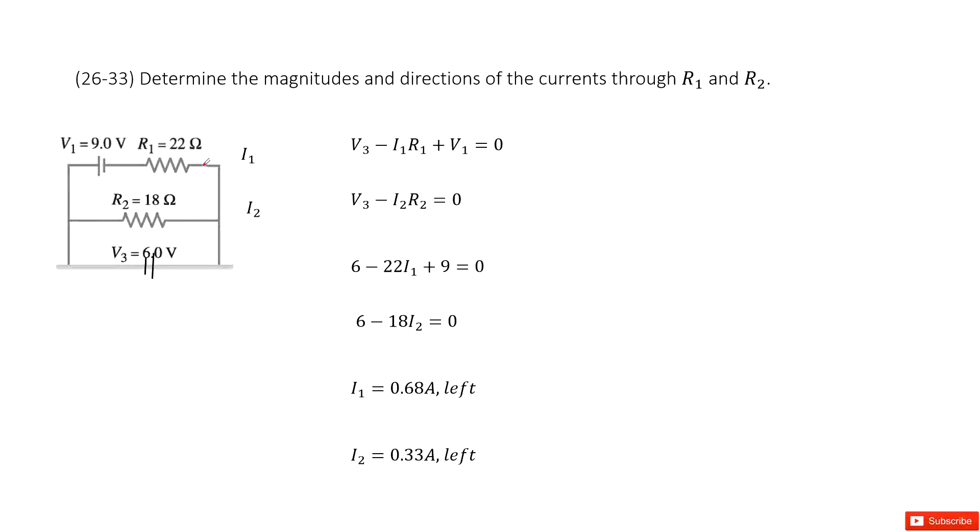As we can see, we assume the current I1 goes through R1 pointing to the left, and the current I2 goes through R2 pointing to the left. Now you can see, in this circuit there are two batteries, so it looks a little bit difficult to solve.